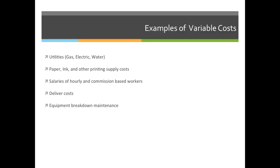Examples of variable costs include utilities — your gas, your electric, and your water bill. It's going to be different every month. You do know you have to pay it every month, so you still have to account for it, but you have no idea how much it's going to be.